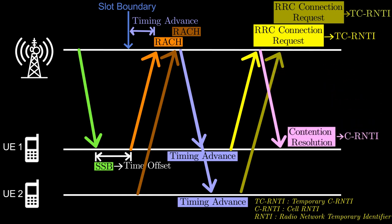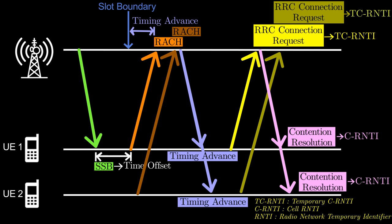Both the UEs receive the contention resolution message and compare CRNTI with TCRNTI. In this example, UE2 receives a different CRNTI from its TCRNTI.